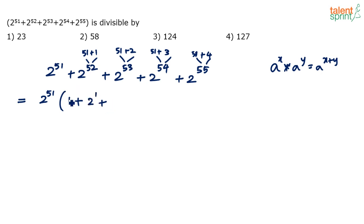So basically this is 2 power 0. 2 power 0 is 1, you all know. So 2 power 0 plus 2 power 1 plus 2 power 2 plus 2 power 3 plus 2 power 4.